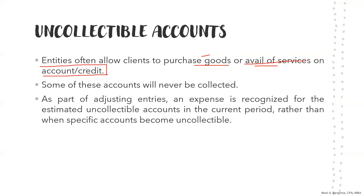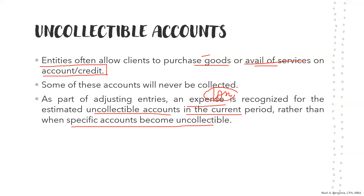As part of adjusting entries, an expense or a loss — typically a loss — is recognized for the uncollectible accounts in the current period rather than waiting for it to become uncollectible. In accounting, we have to recognize income or expenses at the period when they occur, regardless of when cash is received or paid. We immediately recognize a loss when we detect or estimate that customers could not be able to pay. We don't want to overstate our net income or understate our loss or expenses.